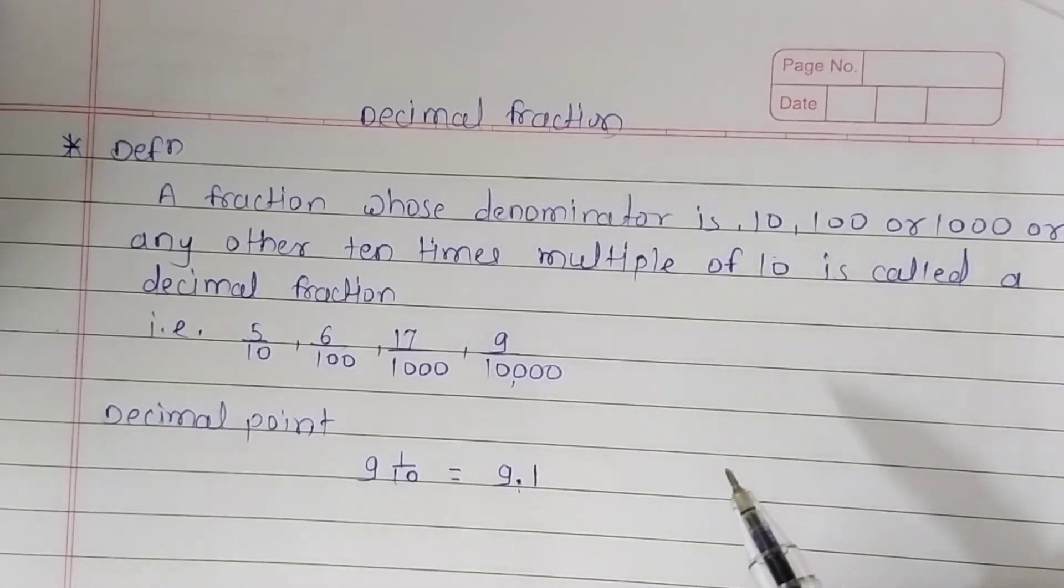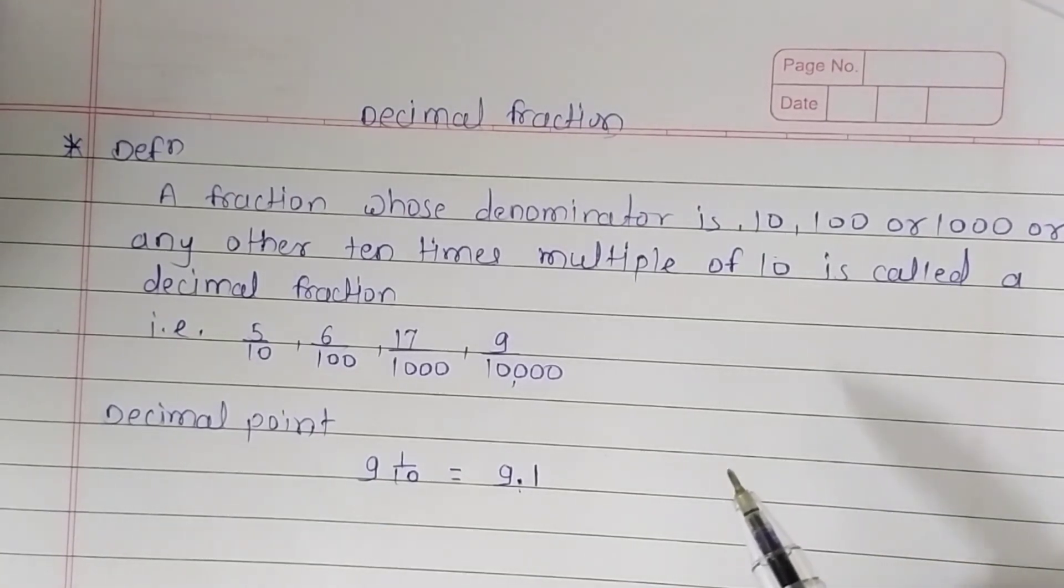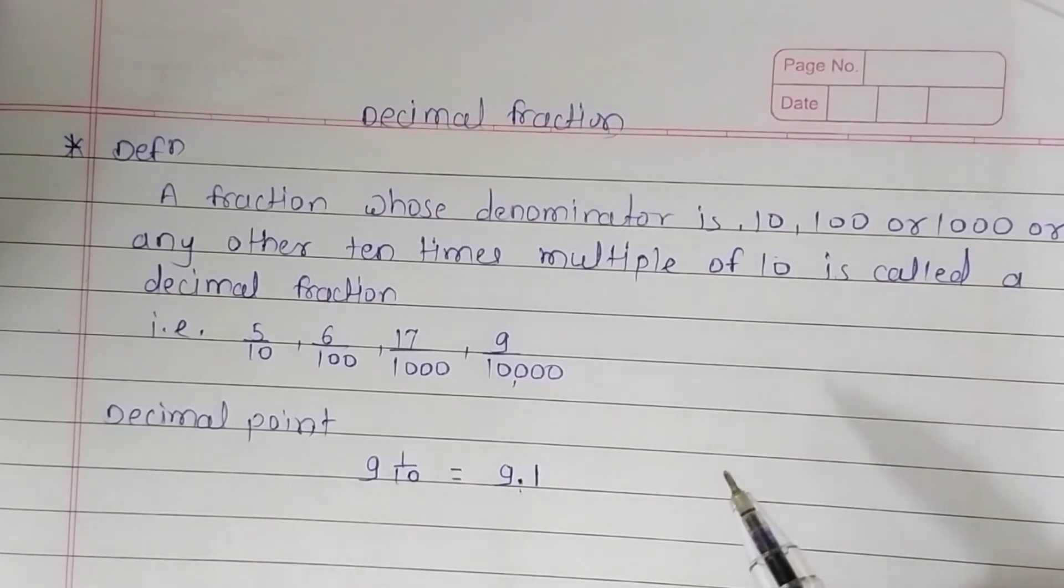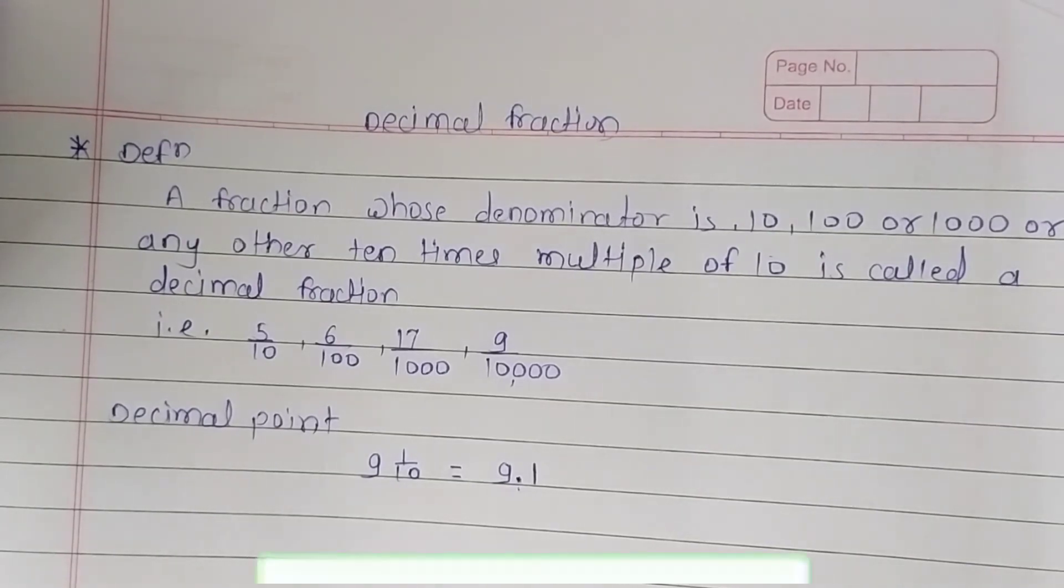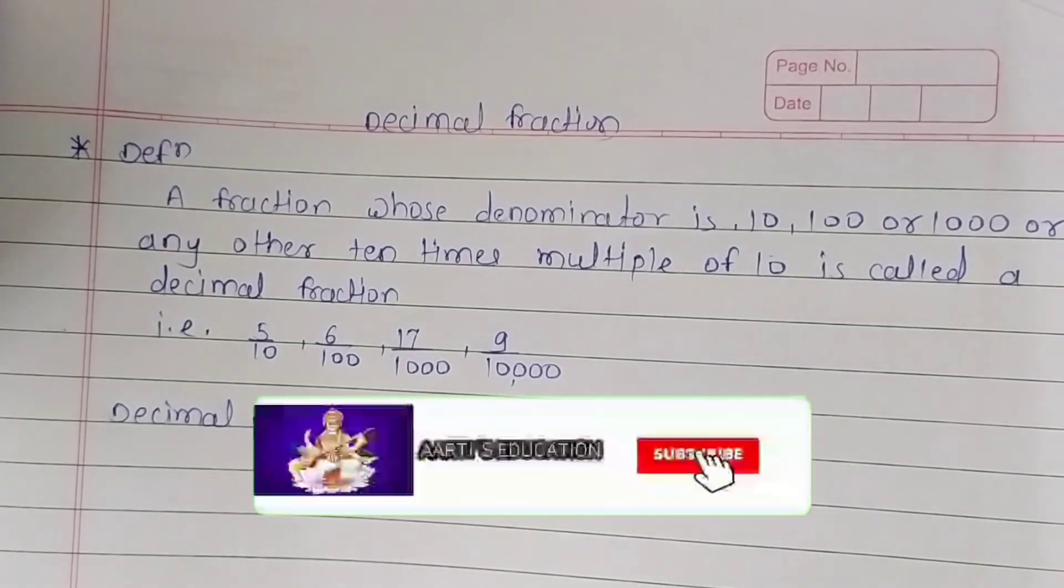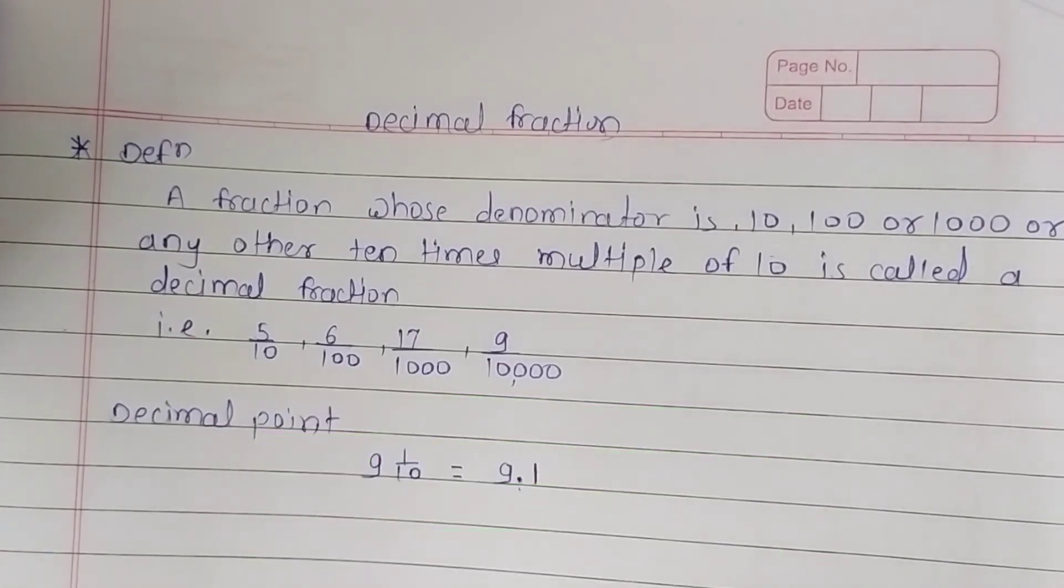And if there is 10, 100, 1000, or 10,000 on the denominator side, we can know that that fraction is a decimal fraction. When we solve the problems based on it, you'll better understand. So see you in the next video. Thanks for watching this video. Thank you.